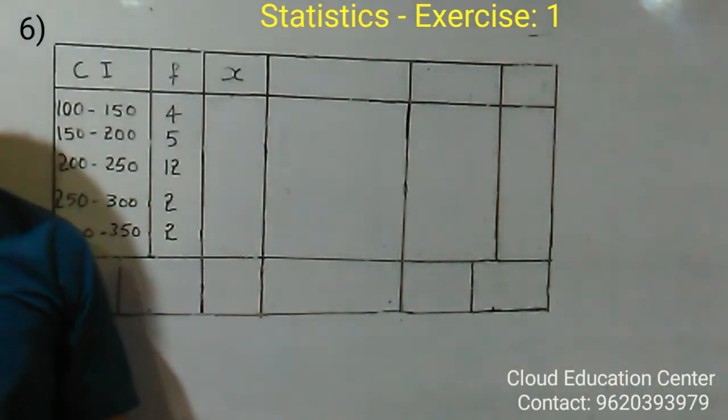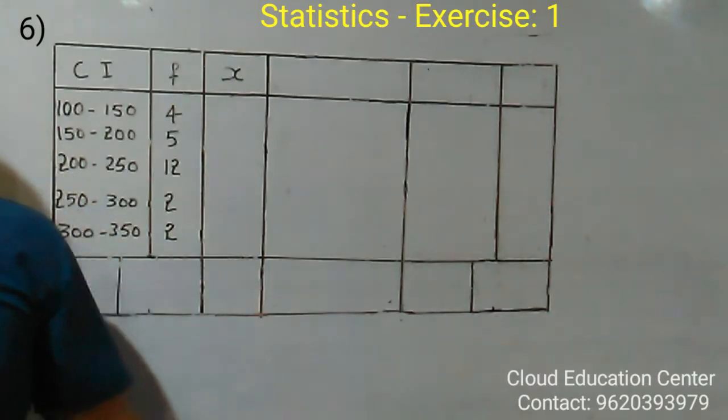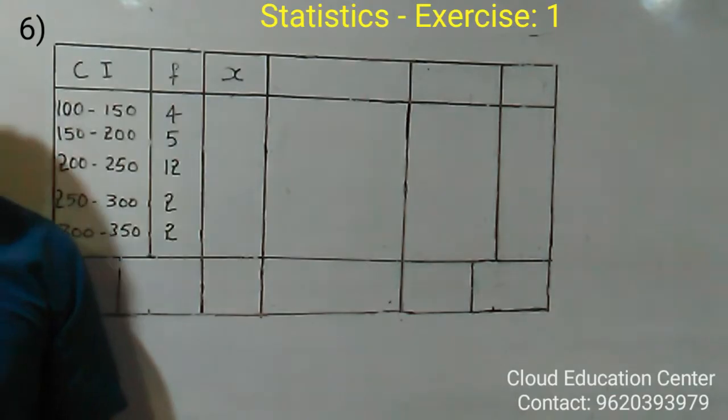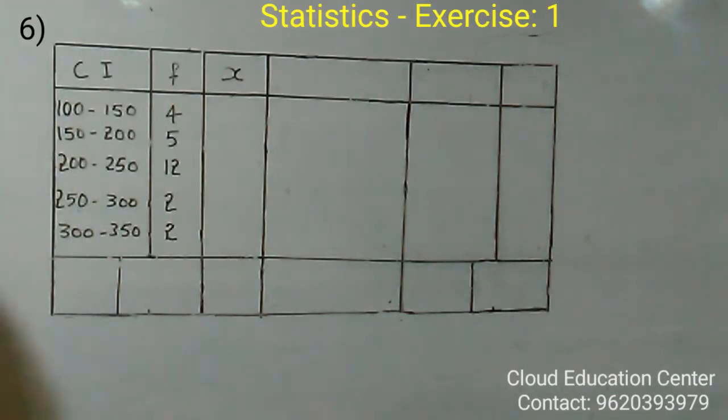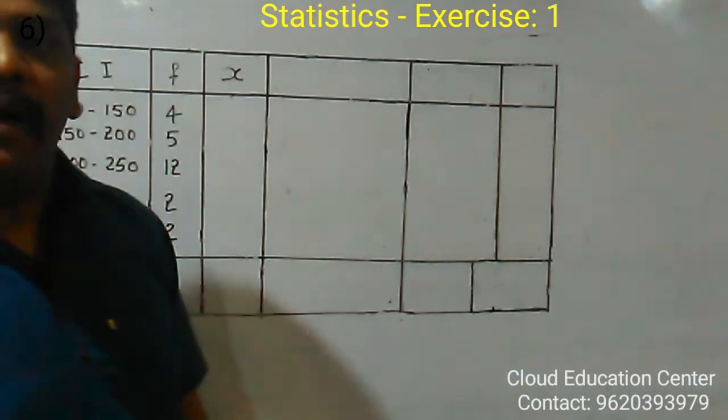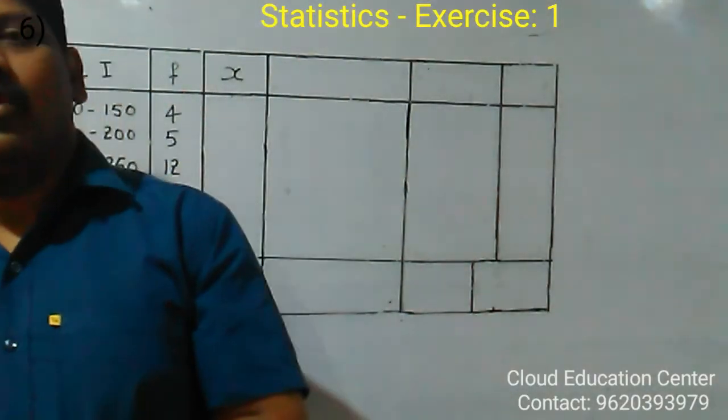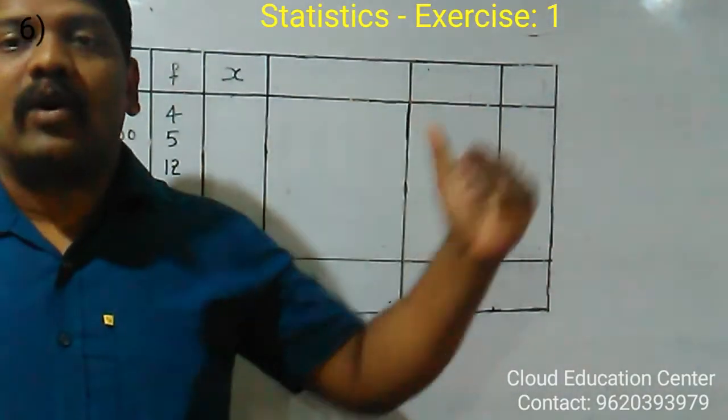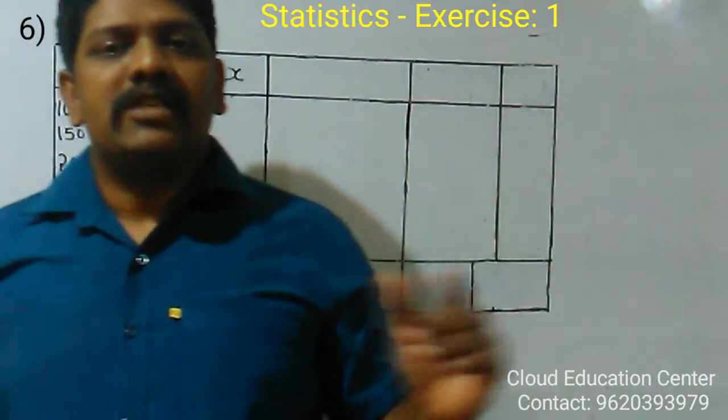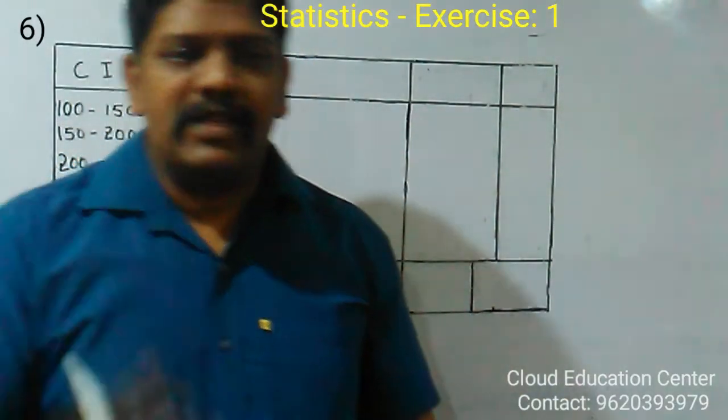Which method we can do? We can do it by direct method or assumed mean method or step deviation method. So I used to do by step deviation method because it reduces the value to smaller value. So it is very easy to calculate. So I use always step deviation method.